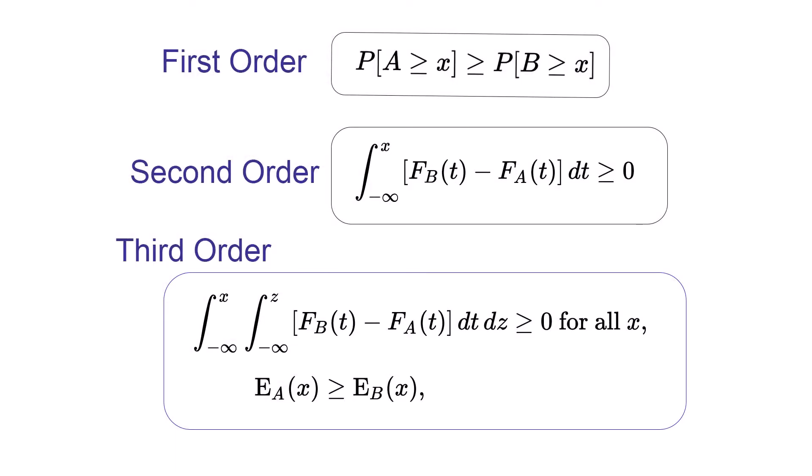Stochastic dominance is a very strong set of rules that can be used to rank random variables. If you are not familiar with these math expressions, please do not worry at all. The SpiceLogic decision tree software will take care of the calculation part for you.